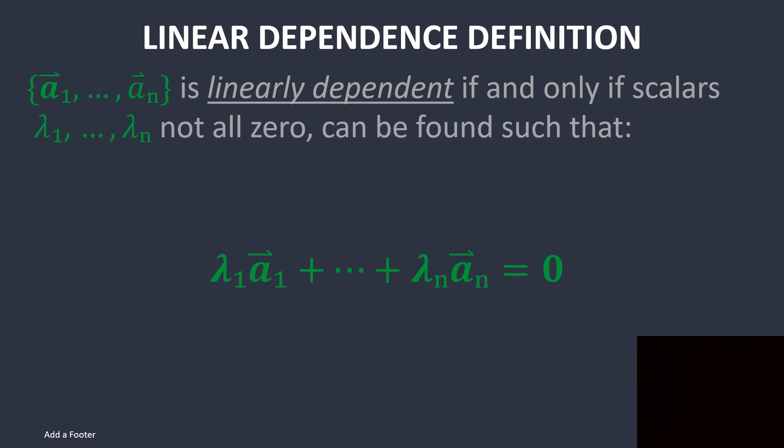Now for linear dependence, also a definition from linear algebra. You have a set of vectors a_1 to a_n, and they are linearly dependent if and only if scalars, which are not all zero, can be found such that these vectors all sum to zero with their respective scalars. And then you can also basically come up with the definition for linearly independent. A set is linearly independent if the only way to represent it as being equal to zero is if all the scalars are equal to zero.